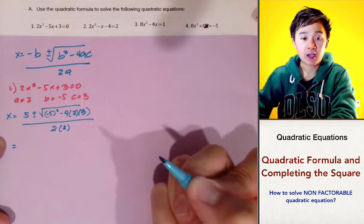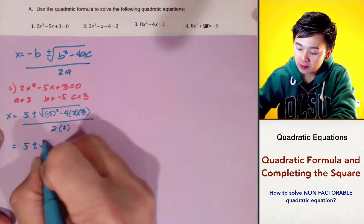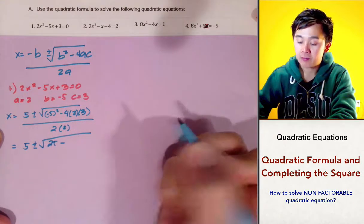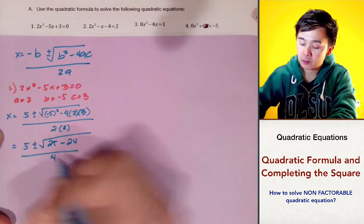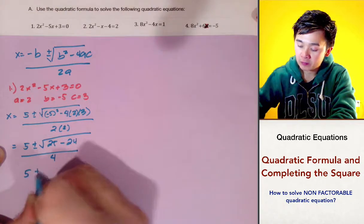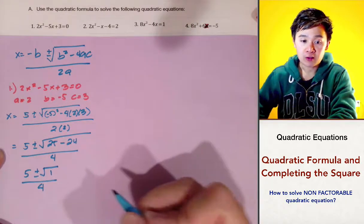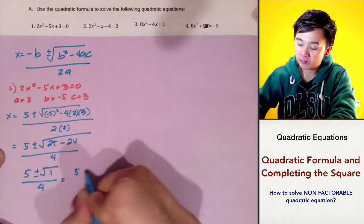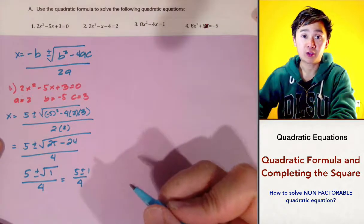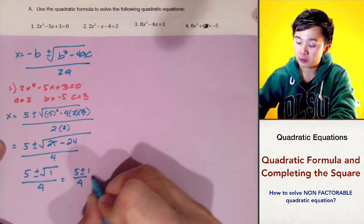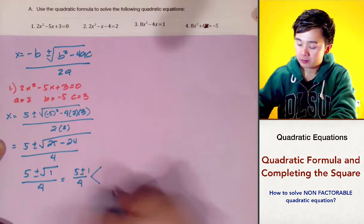By simplifying our formula, we'll have 5 plus or minus the square root of 25 minus 24, all over 4. Now we have 5 plus or minus the square root of 1, all over 4. We know that the square root of 1 is just 1, so we'll end up with 5 plus or minus 1, all over 4. We can still further simplify by splitting this into two expressions.